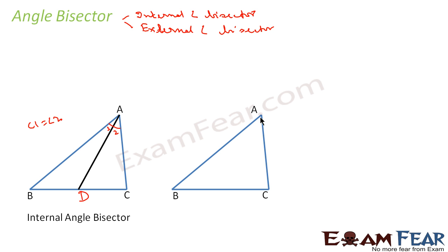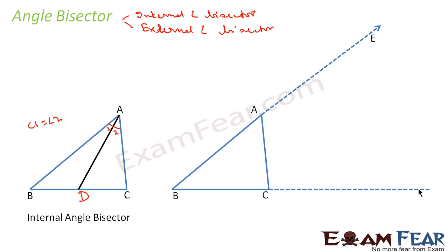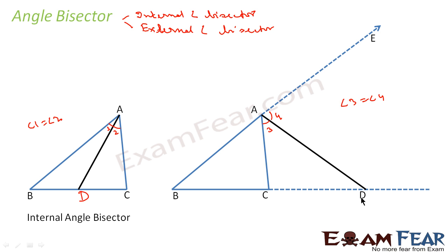Now let's draw the external angle bisector. We have triangle ABC with point A. For angle A, I want to draw the external angle bisector. First, extend the side to get the external angle — this is the internal angle and this is the external angle. We extend the other side too because it will meet somewhere. We draw the angle bisector such that angle 3 is equal to angle 4, and it meets at point D.